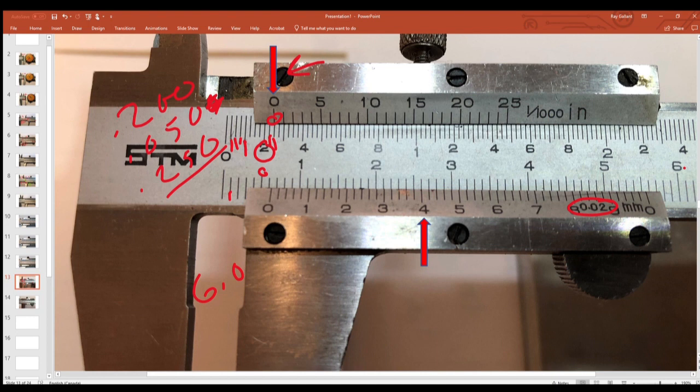So this guy here would be 0.1 millimeter, 0.2 millimeter, 0.3 millimeter, 0.4 millimeter. So 0.4, so that's 6.4 millimeter.